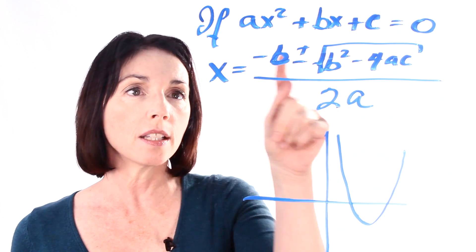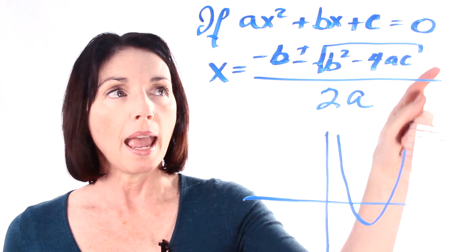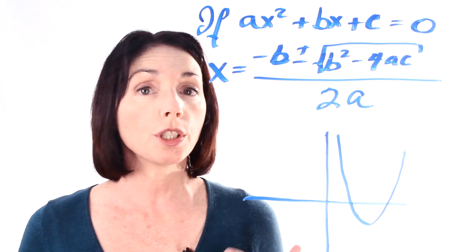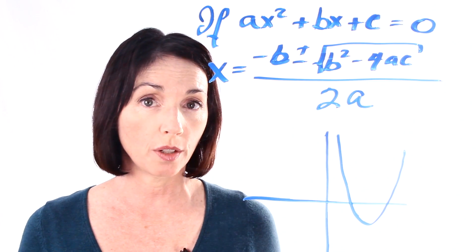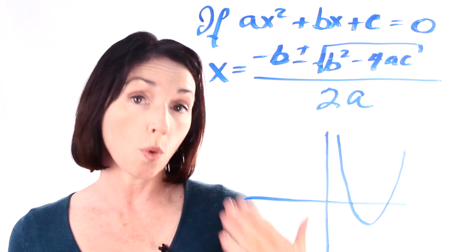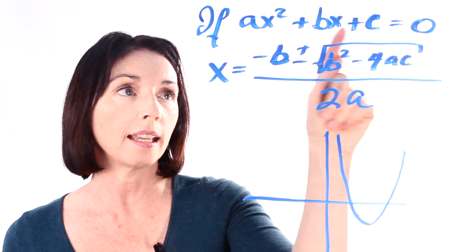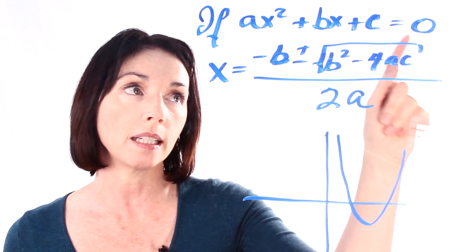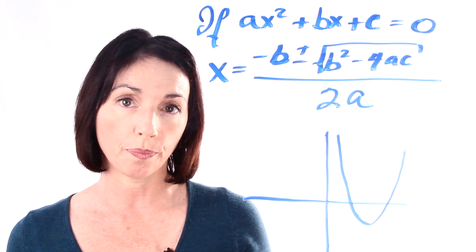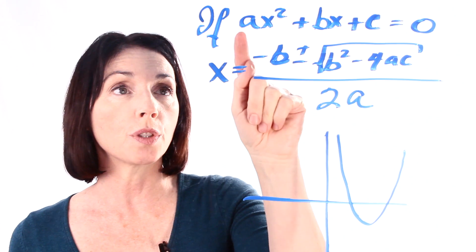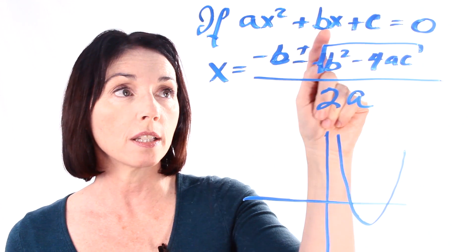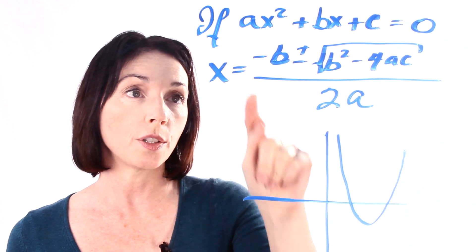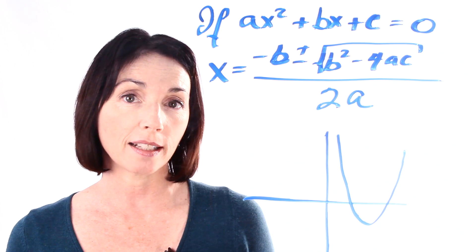This is the quadratic formula, and this part up here is a condition. In order to use the quadratic formula, your quadratic equation has to look like this: ax squared plus bx plus c equals zero. Once it does, you can use the coefficients and this constant term and plug them into the quadratic formula and solve for x.